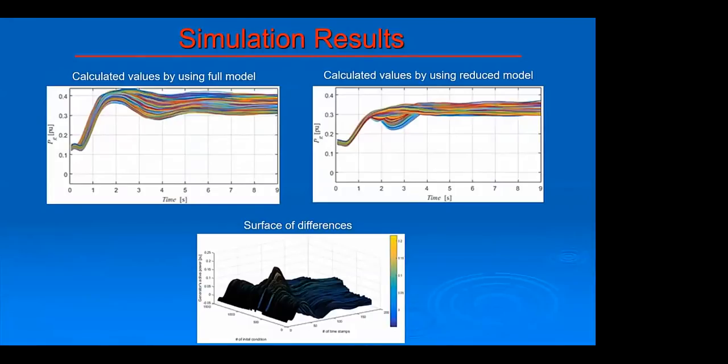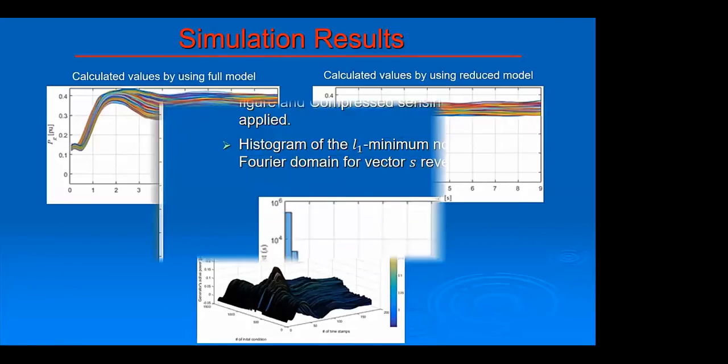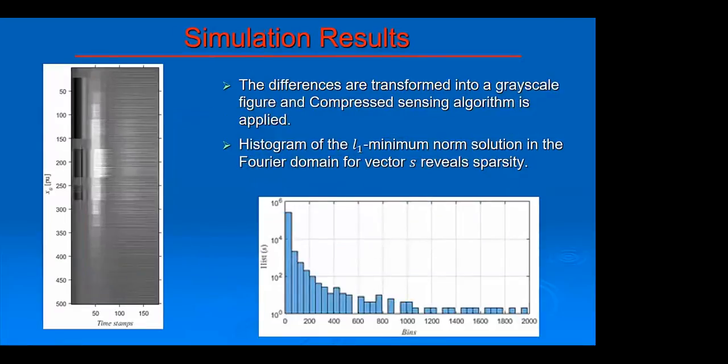Clearly, we did capture some dynamics, but not all of it. There are so many details that cannot be captured by this simple model. These differences are shown down here on this surface plot. Obviously, these differences can be quite significant in some cases because the simple model is great, but still it needs some improvement. To do it, we then use compressed sensing in the next step.